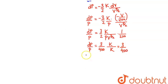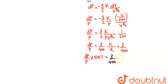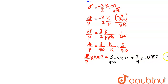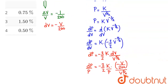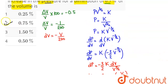Now in percentage terms, percentage increase in pressure equals DP by P into 100%, which gives 3 upon 400 into 100%, equals 3 by 4%, which is 0.75%. So 0.75% is the corresponding increase in pressure, meaning option number 2 is our answer.